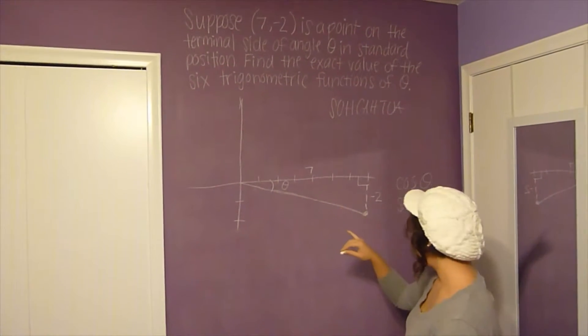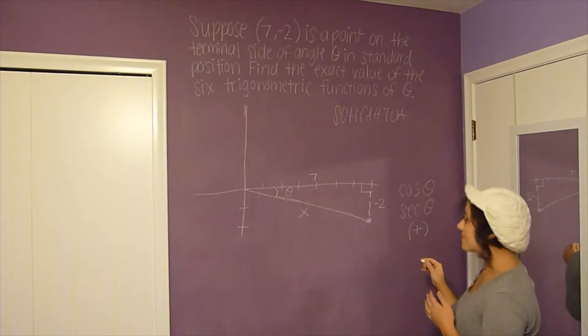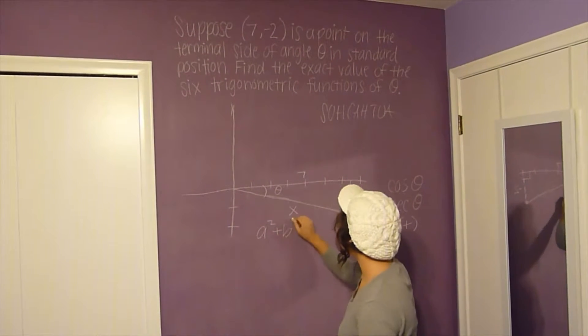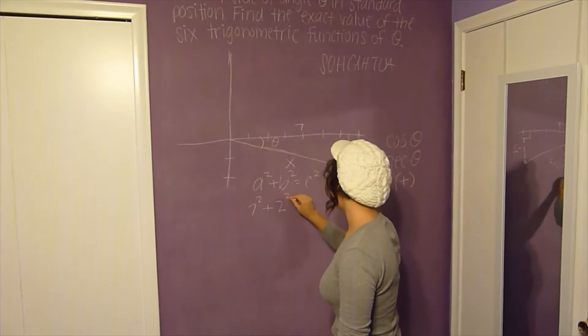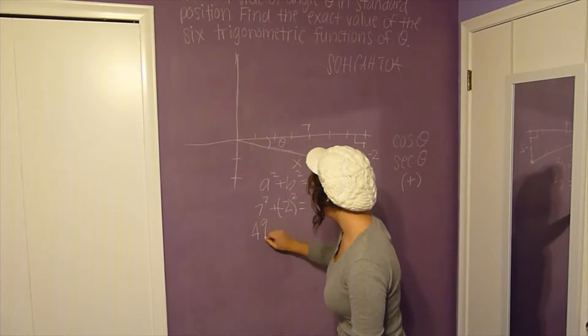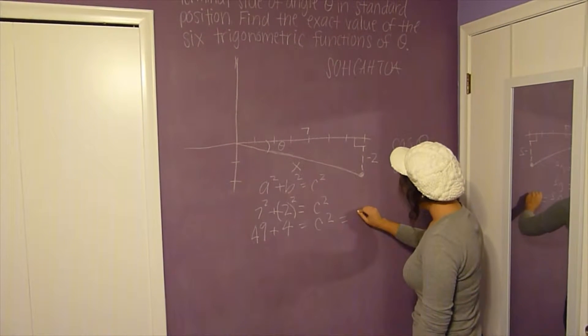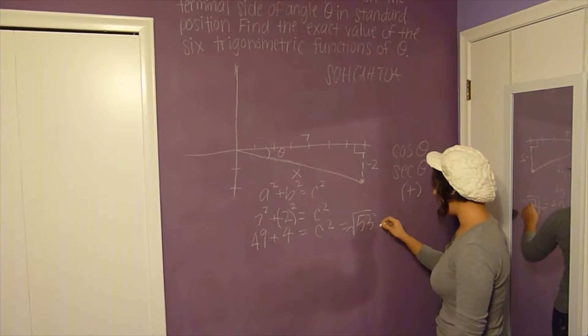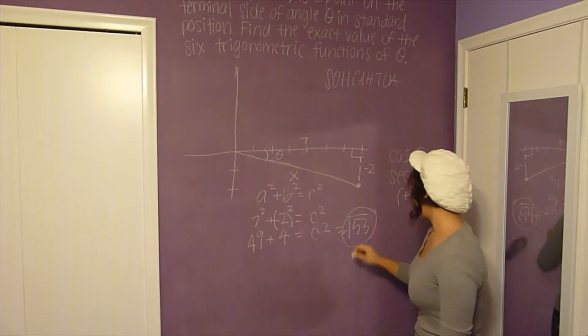What you want to do first is find the length of the hypotenuse. So we're going to do the Pythagorean Theorem: A² + B² = C². We have 7² + (-2)² = C². So we have 49 + 4 = C², which is 53. And you can't reduce that anymore, so this is the length.